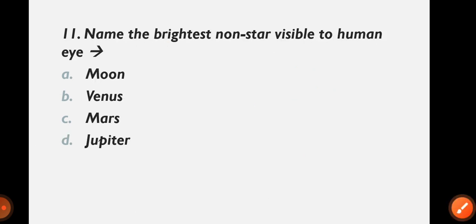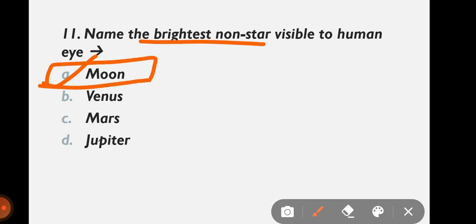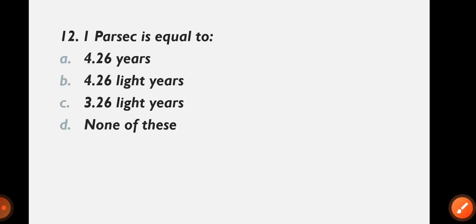Question 11: Name the brightest non-star visible to the human eye — moon, venus, mars, or jupiter? The correct answer is option A: moon. The moon is a non-star, is visible to the human eye, and is the brightest.